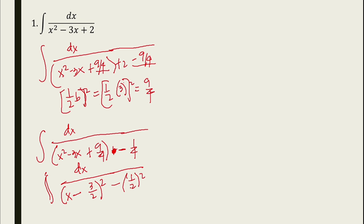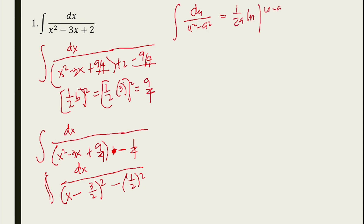Now we can apply the formula since this fits the pattern: the integral of du over u squared minus a squared equals 1 over 2a times ln of (u minus a)/(u plus a) plus C. So our u is equal to x minus 3/2, and our du is equal to dx.